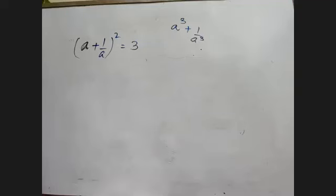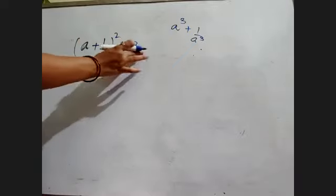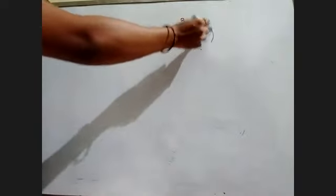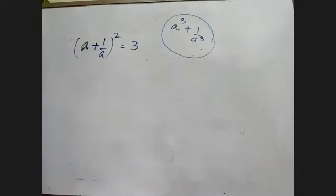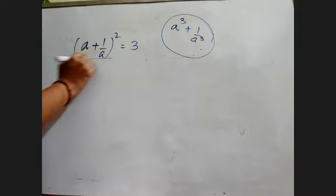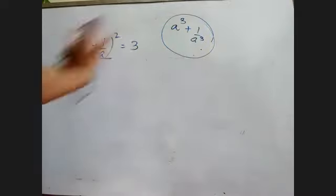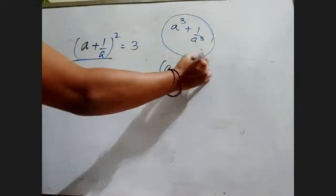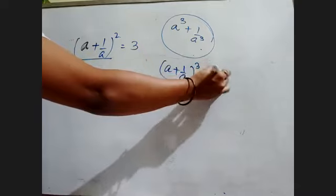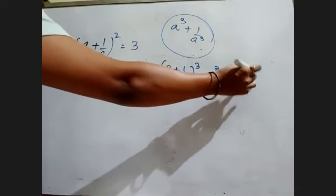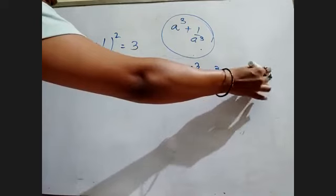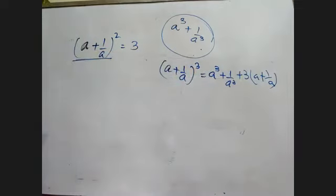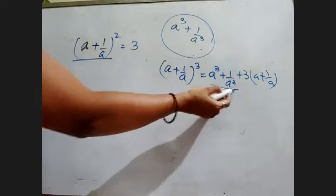The question given to you is (a + 1/a)² = 3, and you have to find out the value of a³ + 1/a³. Only if I write a plus 1 by a whole cube is equal to a³ + 1/a³ plus 3(a + 1/a), only then I'll be able to find out a³ + 1/a³.